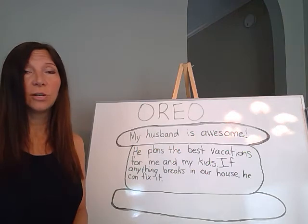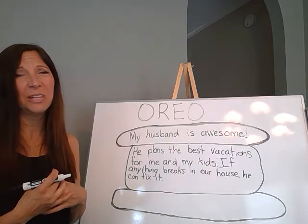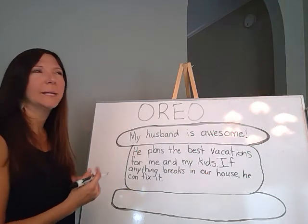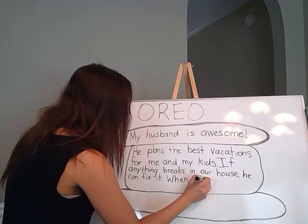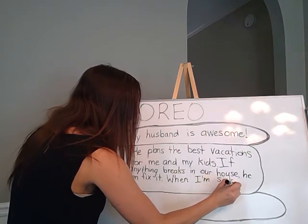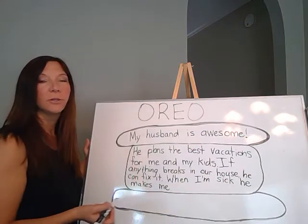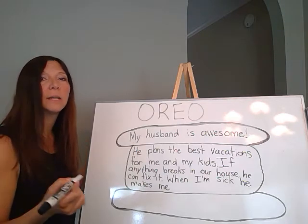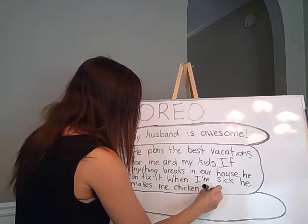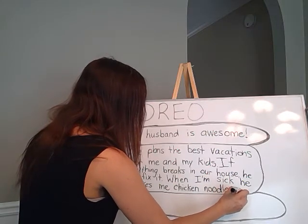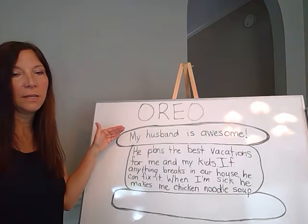I'm going to give you a third reason why my husband is amazing. Sometimes when I get sick, I don't feel so great — but you know what he does? He makes me chicken noodle soup. So I'll write: 'When I'm sick' — since I'm using the word 'I,' I have to use an uppercase letter — 'When I'm sick, he makes me chicken noodle soup.' I'm making my sentence a little bit longer by including what kind of soup.